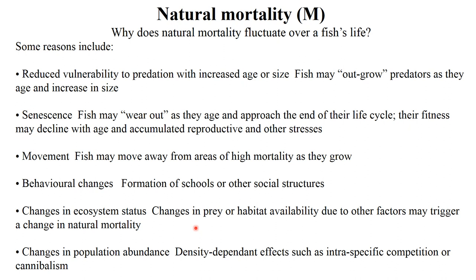A healthy ecosystem tends to have a low natural mortality rate, while an unhealthy ecosystem has a higher rate. Changes in prey habitat availability also matter — if prey have good habitat to hide from predators, mortality is reduced. Additionally, density-dependent factors play a role: at high densities, intraspecific competition and cannibalistic behavior can increase natural mortality.